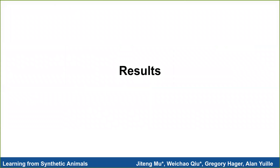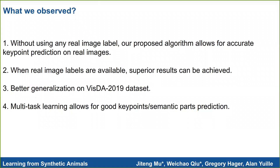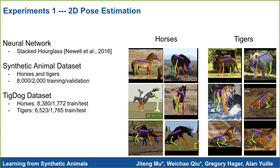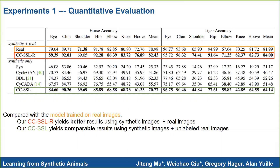Here is a high-level overview of our experiments. We observe that our algorithm generates accurate predictions for animal 2D poses. We also try a multi-task learning setting to show we can train keypoints and semantic parts jointly. We employ the original stacked hourglass model as our backbone and train a separate model for each animal category. On the right, we show our 2D pose estimation results on the TigDog dataset without using any real image labels. In both settings, our models achieve better results.